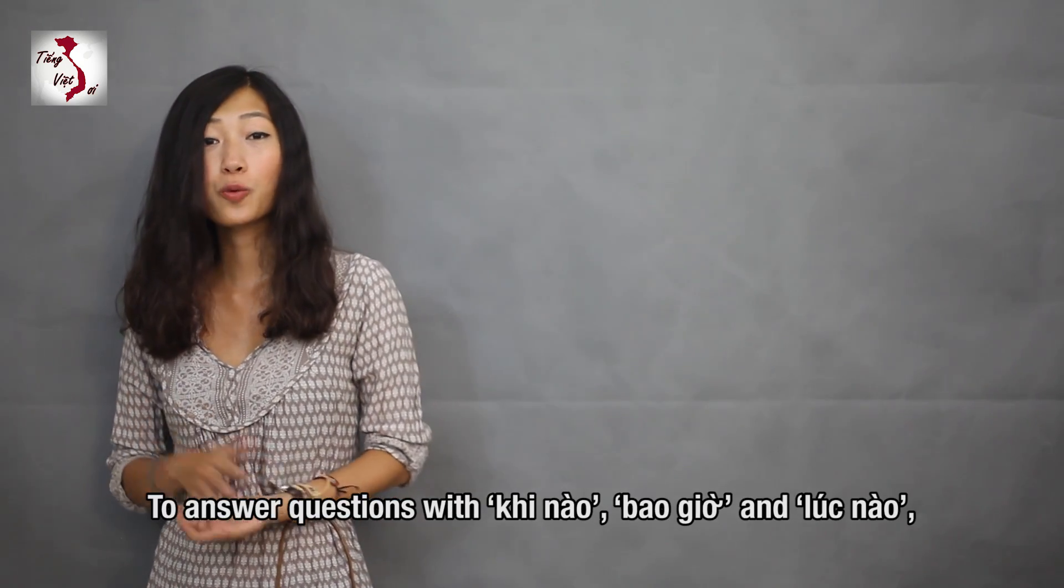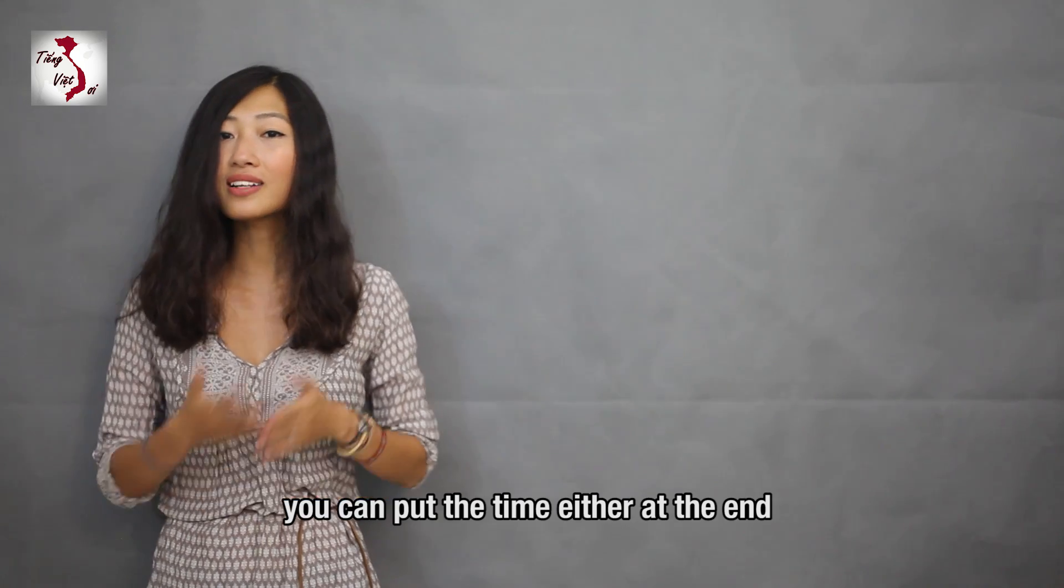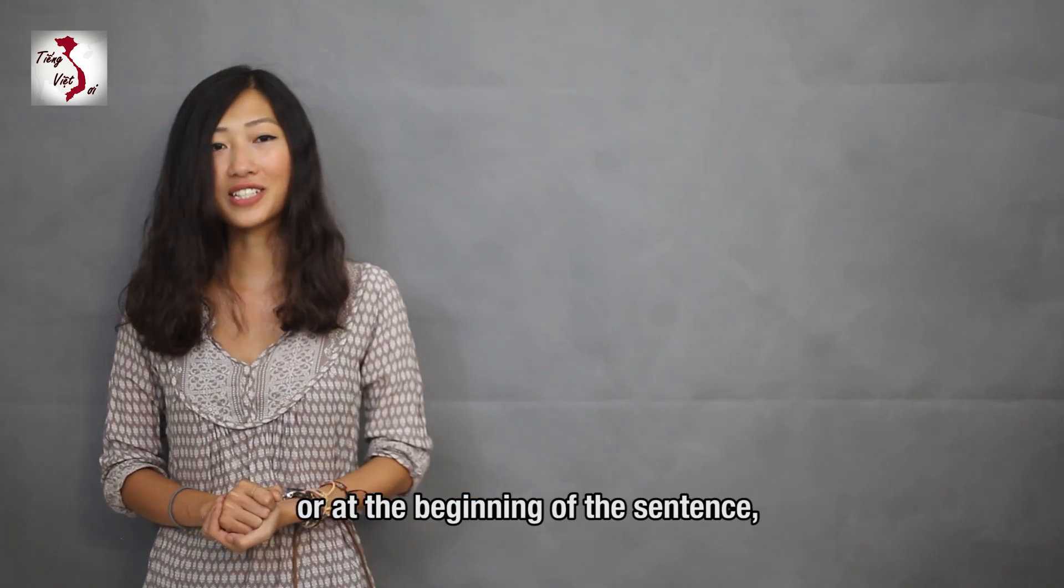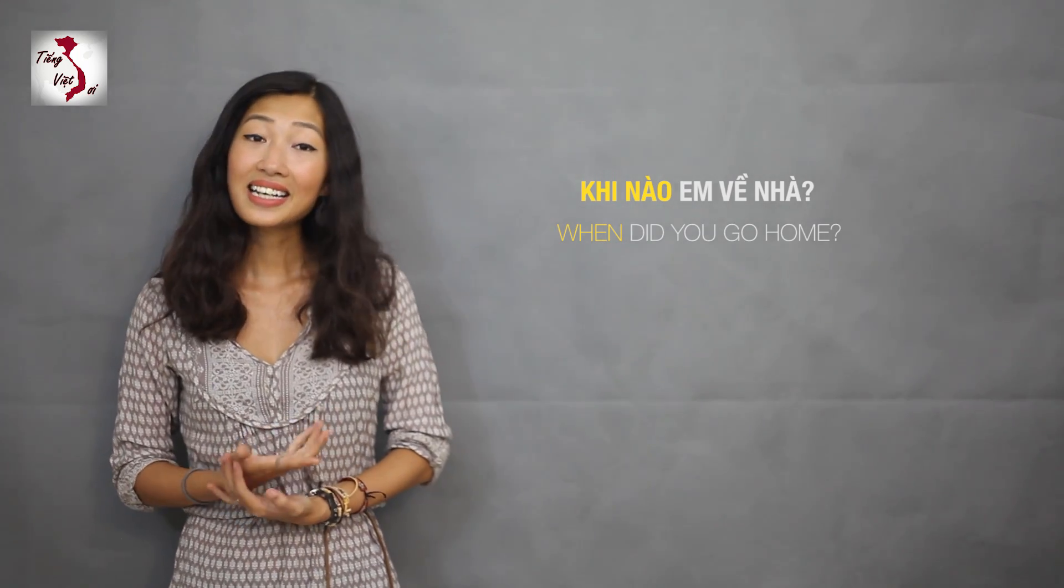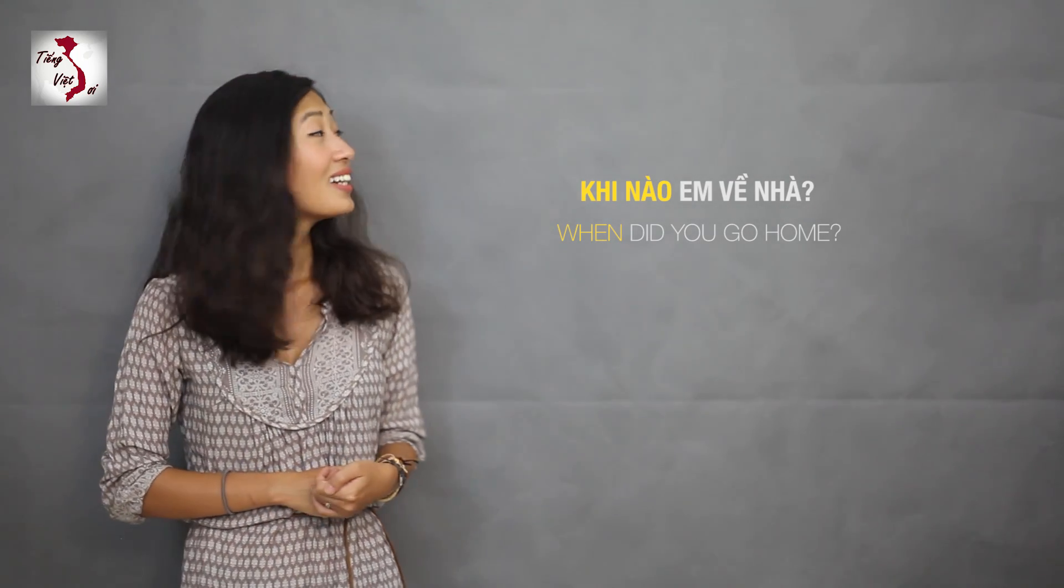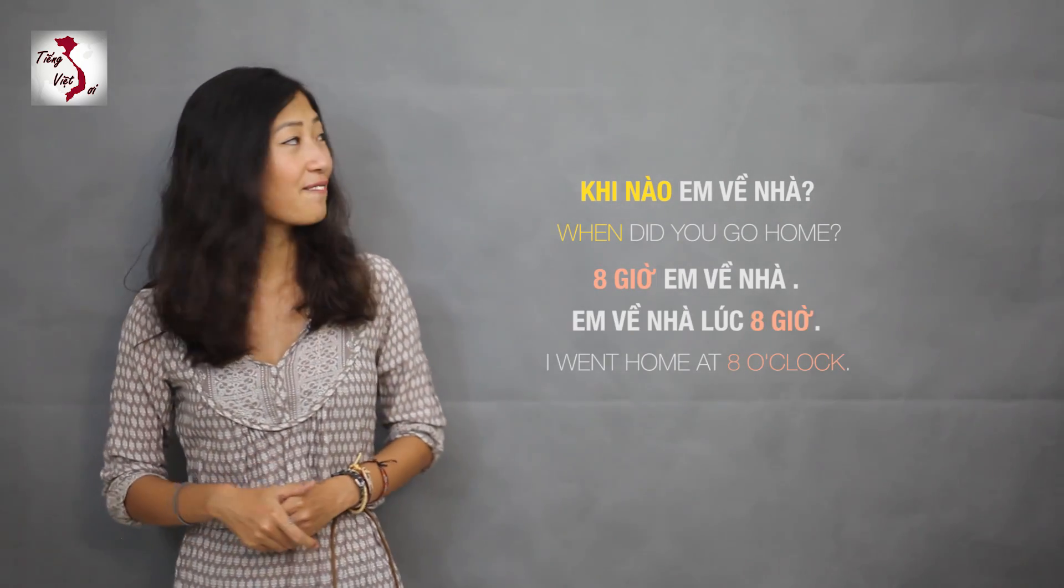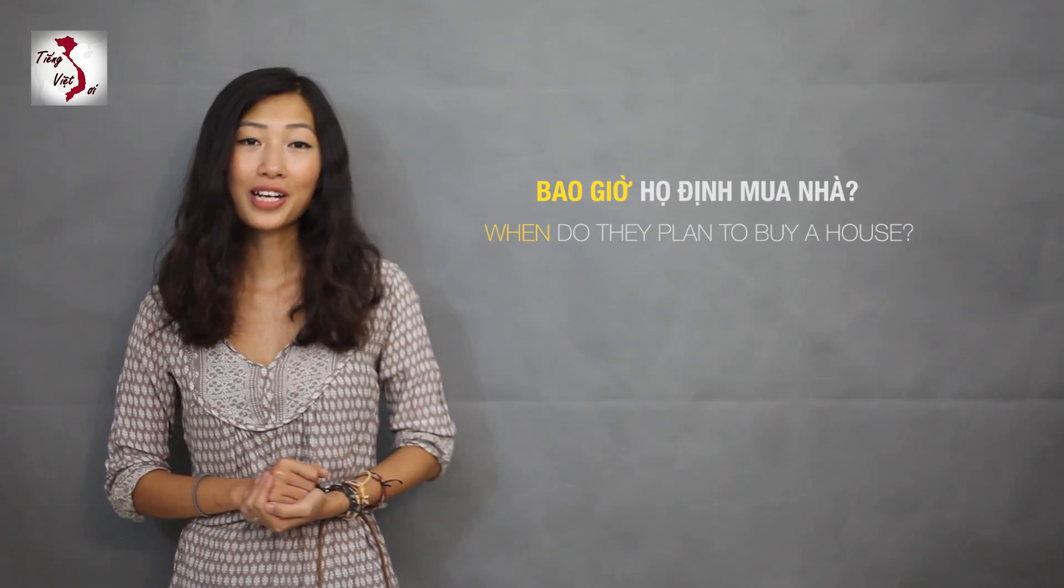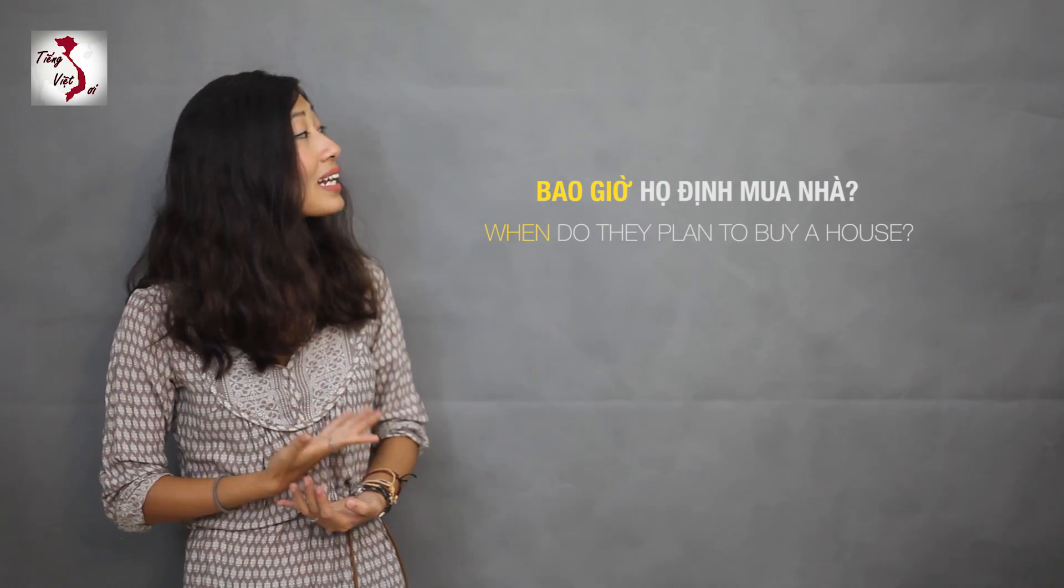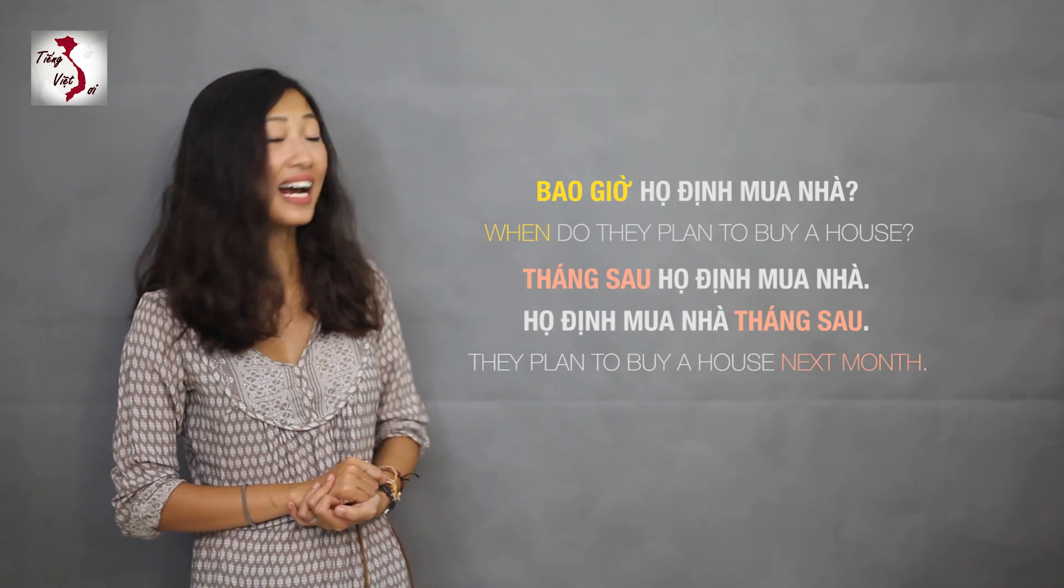To answer questions with khi nào, bao giờ and lúc nào, you can put the time either at the end or at the beginning of the sentence. It doesn't matter. Like this. Khi nào em về nhà? You can answer with tám giờ em về nhà or em về nhà lúc tám giờ. Bao giờ họ định mua nhà? Tháng sau họ định mua nhà or họ định mua nhà tháng sau.